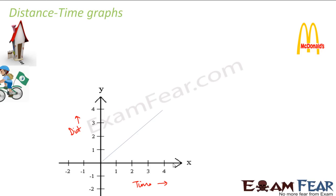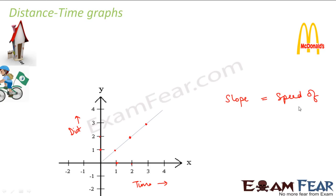When distance increases linearly with time, we get a straight line graph. The slope of this straight line is given by tan θ, where tan θ = perpendicular / base (AB / OB) from the right-angled triangle. Looking at the example graphically, if it covers 4 kilometers in 4 hours, then AB = 4 and OB = 4, giving a slope of 1 kilometer per hour. This is the speed of the body.